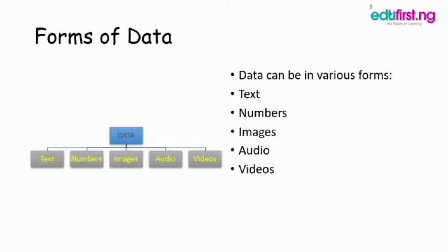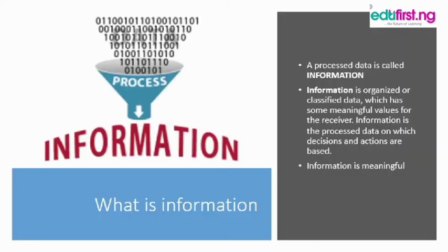Now let's look at what is information. A processed data is called information. After the data has been collected and processed, the output is called information. Information is organized or classified data which has some meaningful values for the receiver. Information is processed data on which decisions and actions are based.